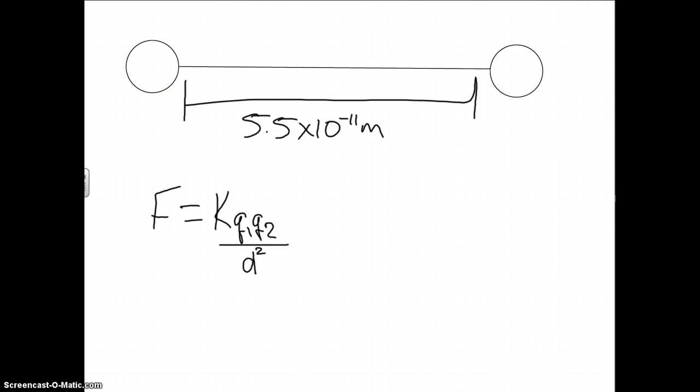So for K, it's a constant, which we all know is a known. And that is 9 times 10 to the 9th.